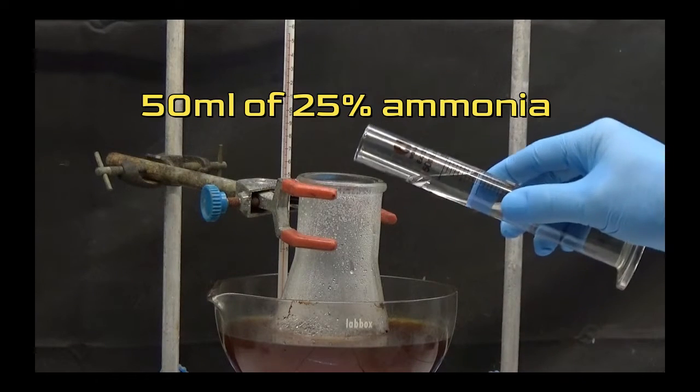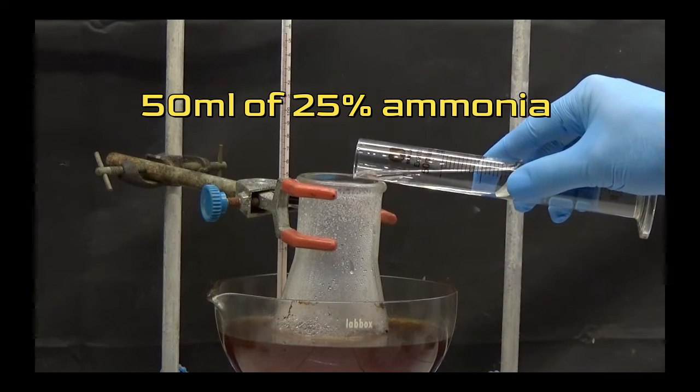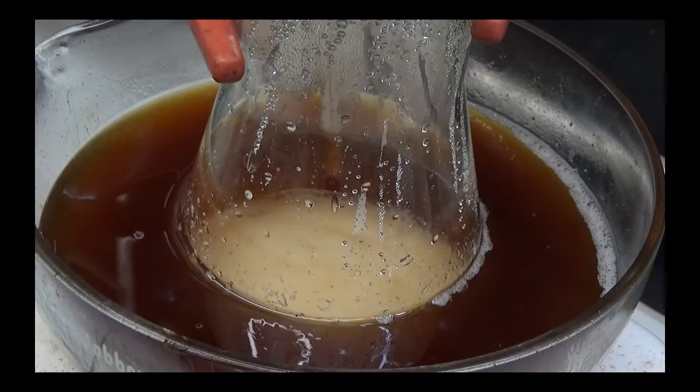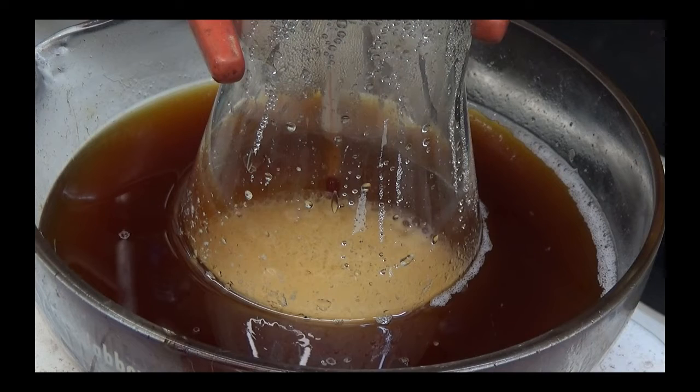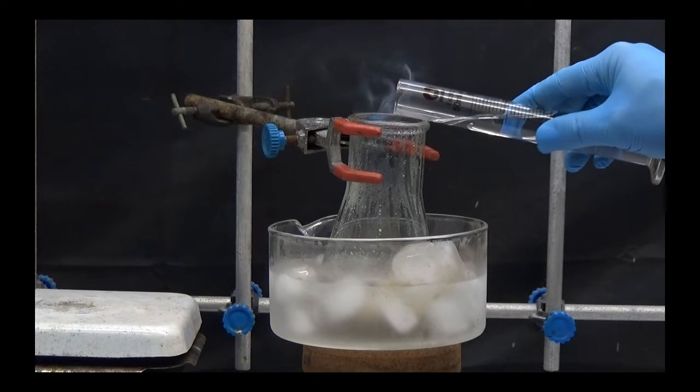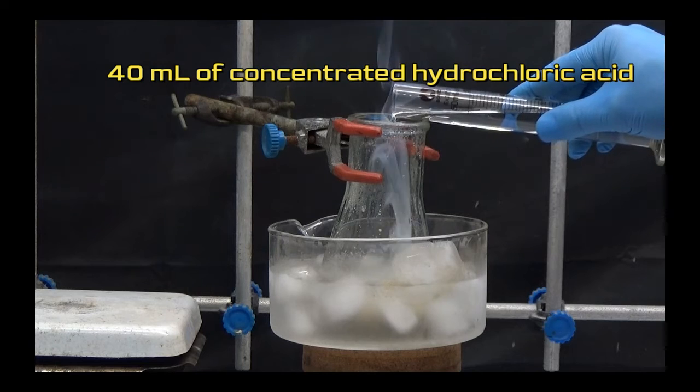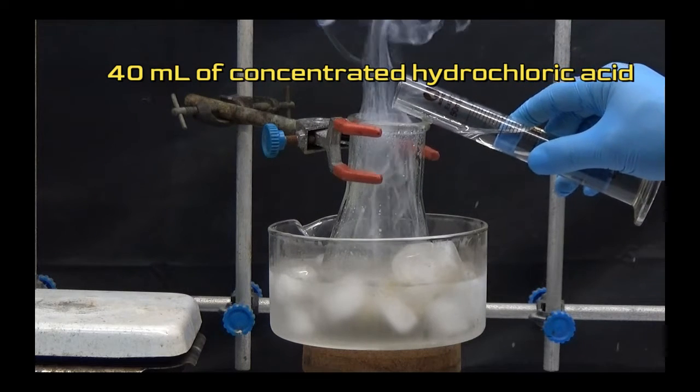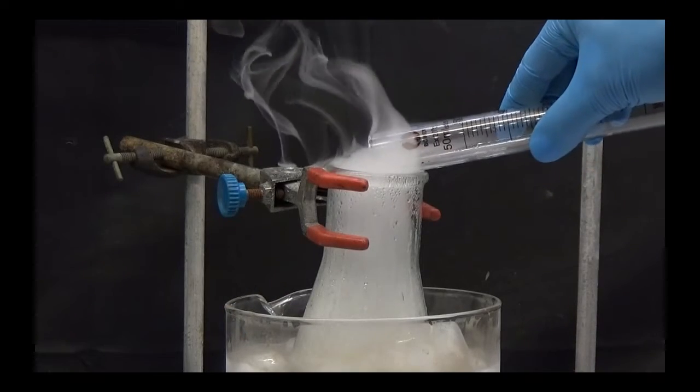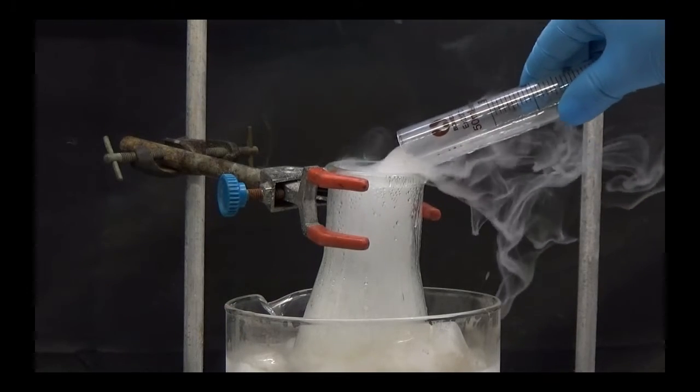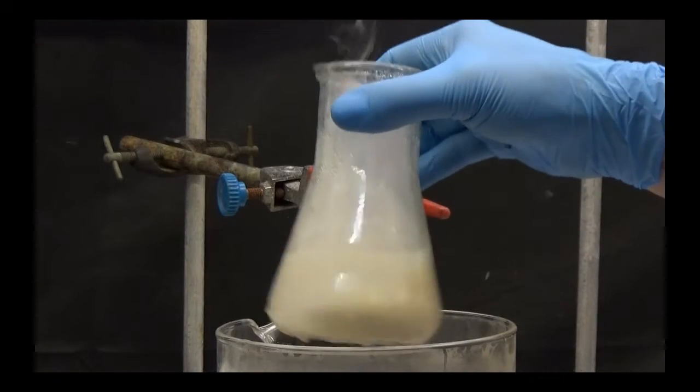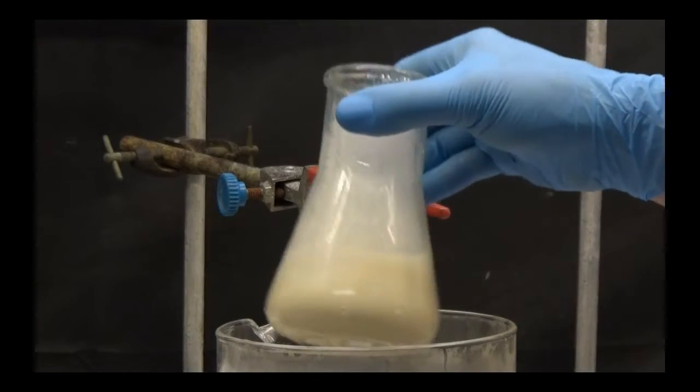After 2 hours have gone by, carefully add 50ml of 25% ammonia in 10ml portions. Bring to a boil for a total of 10 minutes. Cool with an ice bath and add 40ml of concentrated hydrochloric acid. A white precipitate is formed. Collect the precipitate by suction.